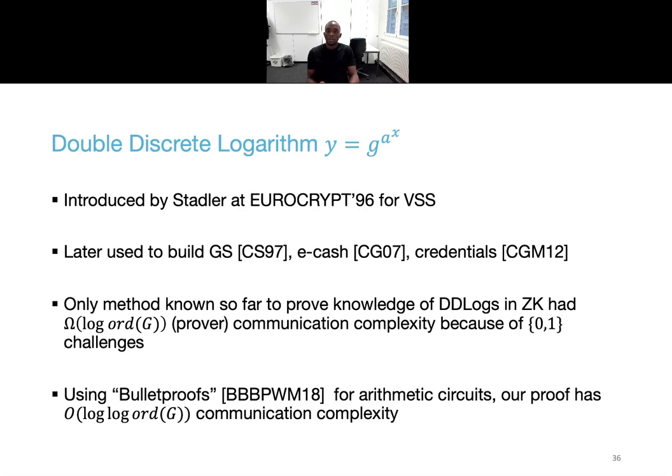This problem was introduced by Stadler in 1997 to build a verifiable secret sharing scheme. It was later used to build group signatures, electronic cash, credential systems, so it has a wide range of applications. The only method known so far to prove knowledge of double discrete logs is due to Caminisch and Stadler. And it has a communication complexity of the order of log of the group order because it uses 0-1 as challenges. Using bullet proofs for arithmetic circuits, we managed to get a communication complexity of the order of log log of the group order. The difficulty is now to encode this problem as a circuit and make it suitable for bullet proofs.